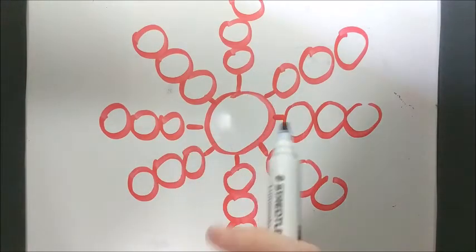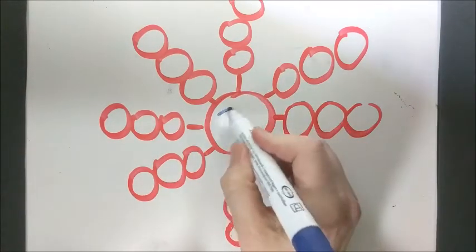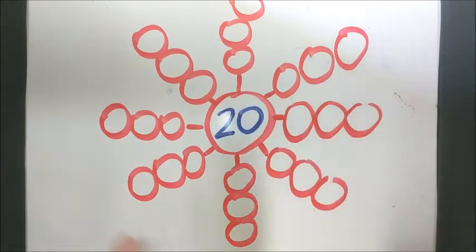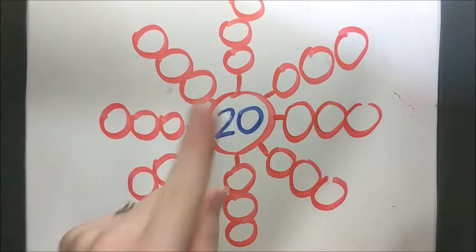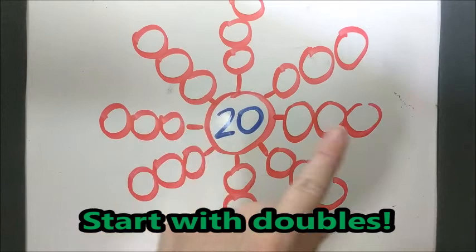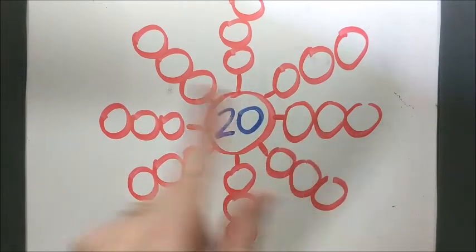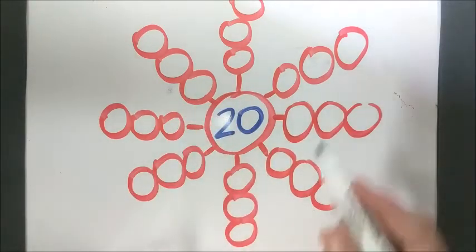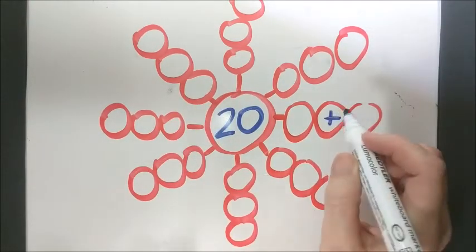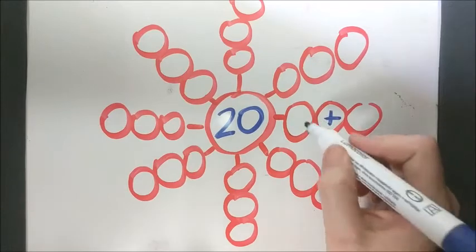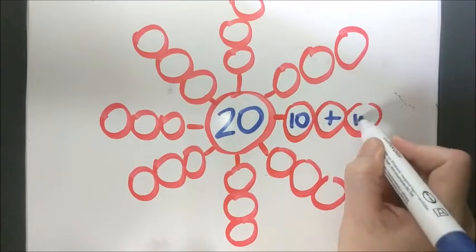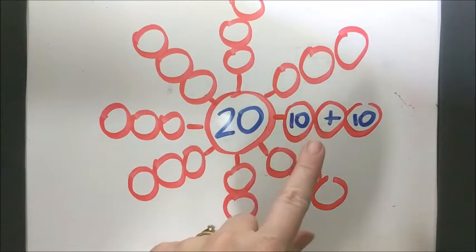I'm going to pick a number that we've worked with a lot. I'm going to go with 20. Now the trick for this game is you always start with doubles, and it doesn't matter where you go but I'm going to go over here first. For our doubles, what doubles end up being 20? You should know it's 10 and 10.